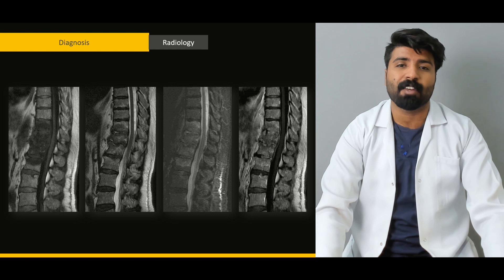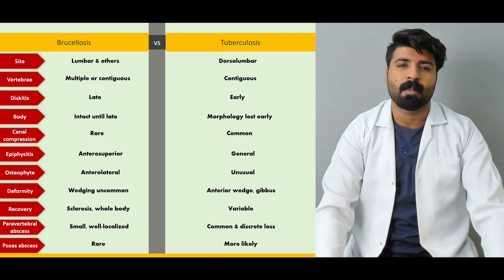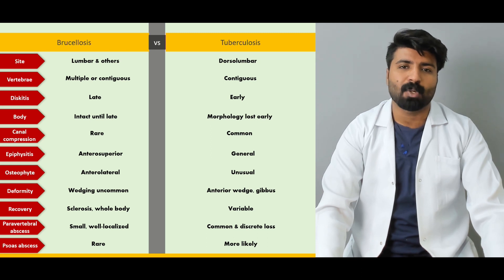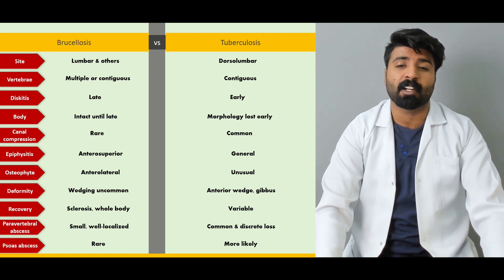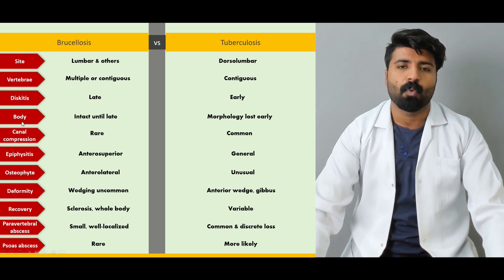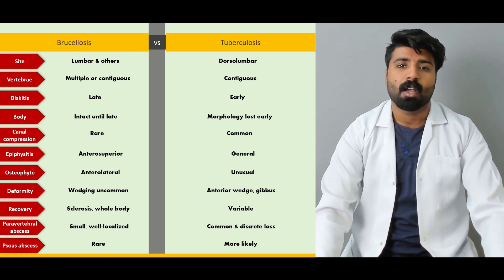Next, we go into the radiological manifestations, because the patient is going to have back aches and back problems. We need to differentiate radiological findings in brucellosis versus tuberculosis — what kind of vertebrae are affected in brucellosis versus tuberculosis, and all the factors including compressions, canals, deformities, and recoveries. We'll compare them in detail to understand what pathology brucellosis causes in the spine.